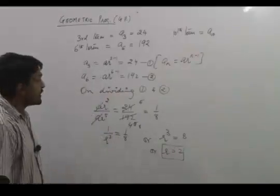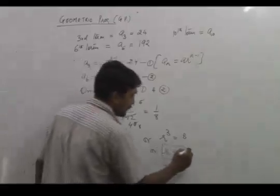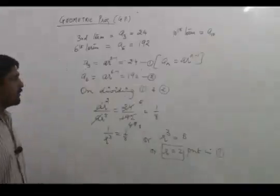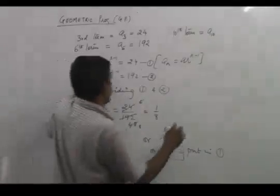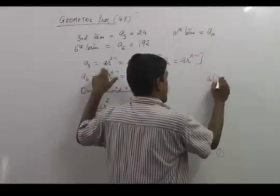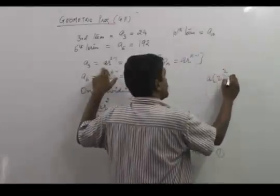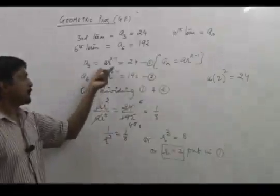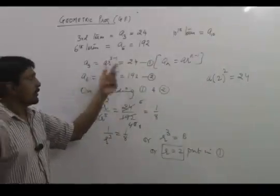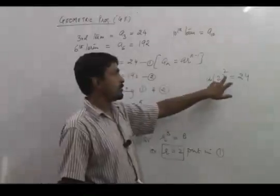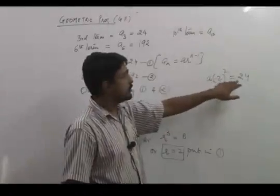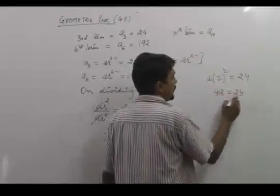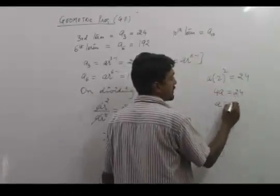The common ratio is 2. We put this in equation 1. We get a times r squared equals 24. After putting r as 2, we get a times 2 squared equals 24, so 4a equals 24, therefore a equals 6.